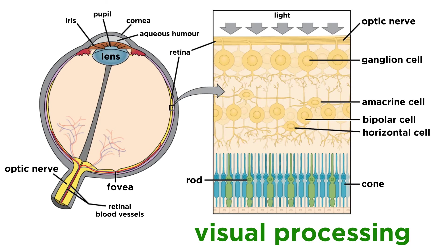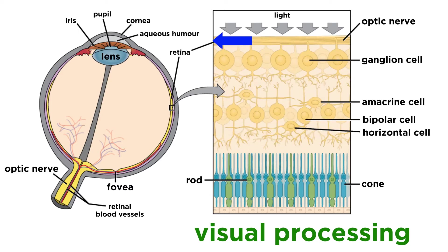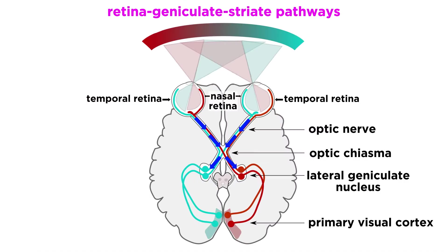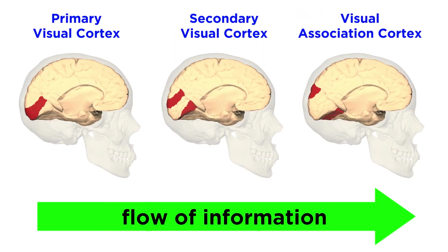When we looked at visual processing, we learned about hierarchical organization. We saw how light is received by photoreceptors and transduction occurs. This results in neural signals which travel to the lateral geniculate nuclei, then to the primary visual cortex, then the secondary visual cortex, and then the visual association cortex. A similar kind of hierarchy applies to all the senses.